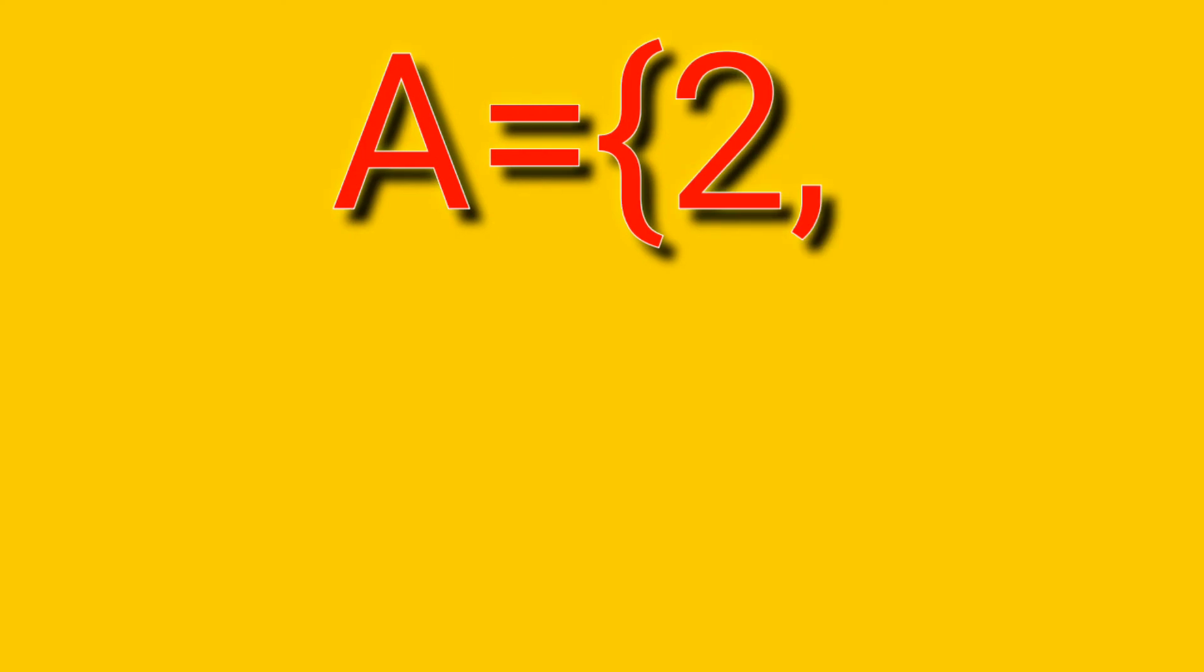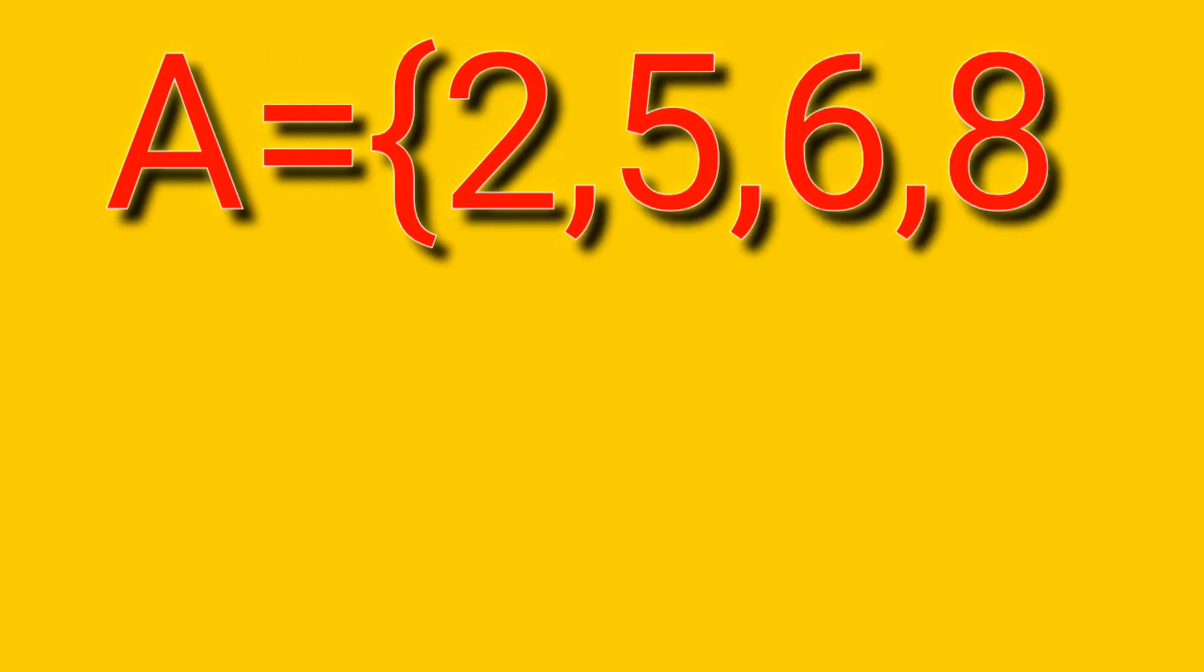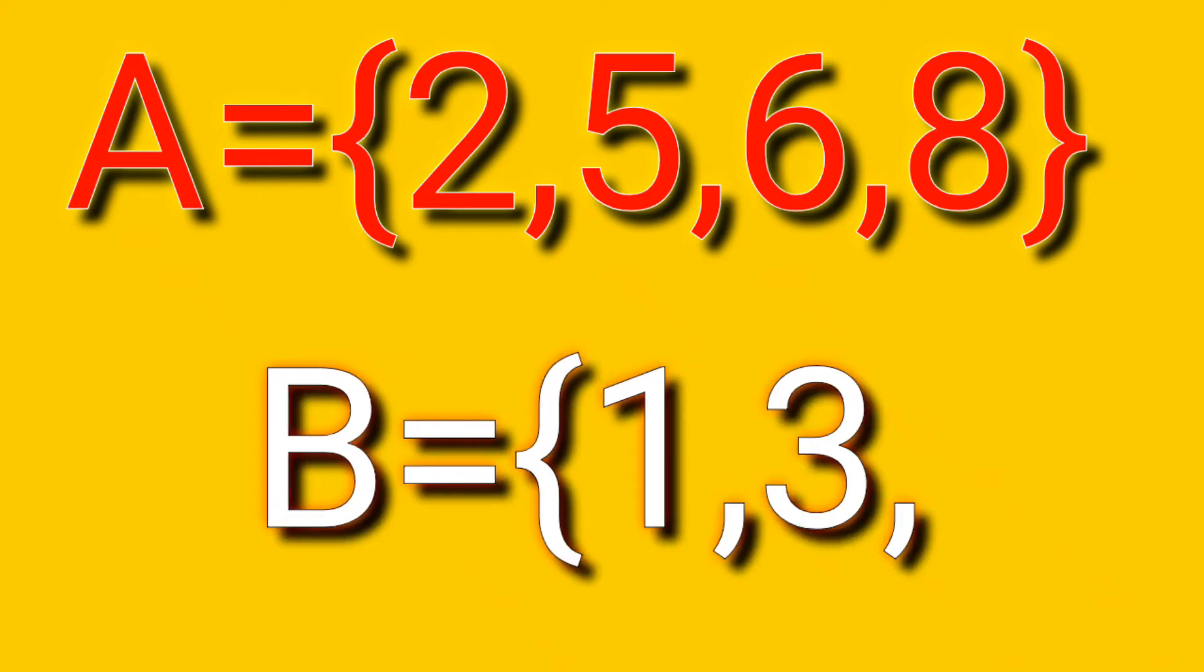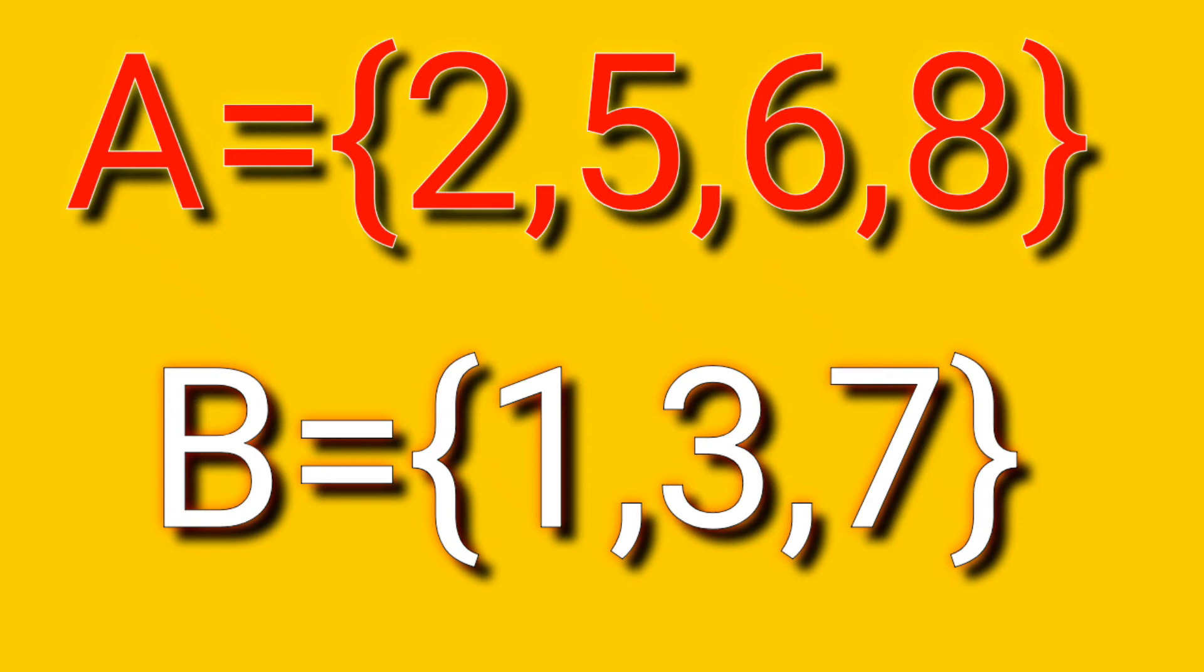Let's try another example. Ek set A hai hamare paas jiske element hai 2, 5, 6, 8. Aur ek set B hai jiske element hai 1, 3, 7. Toh aap dekhe in dono sets ka koji bhi element common nahi hai. That is why they are disjoint sets.